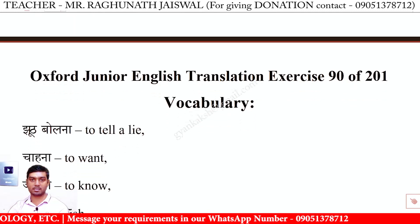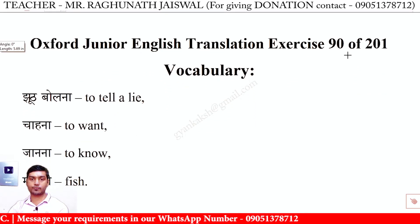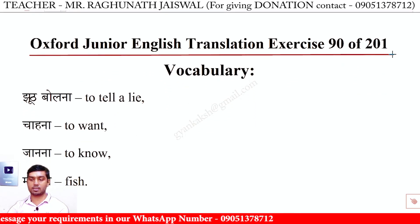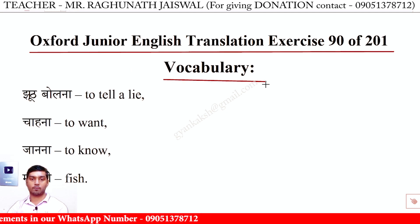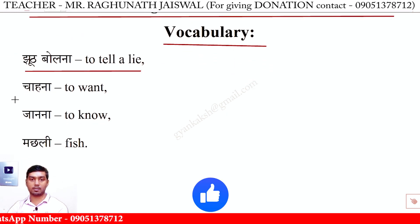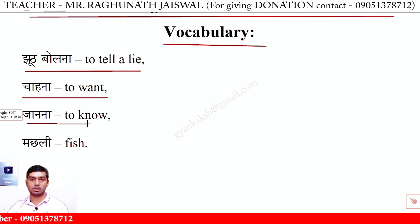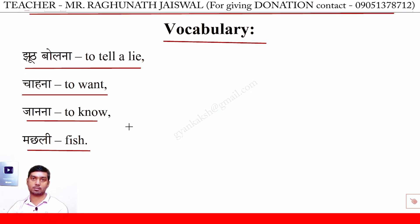Okay, let's also note some vocabulary from this lesson. Oxford Junior English Translation, exercise 90 of 201, vocabulary: झूठ बोलना — to tell a lie; चाहना — to want; जानना — to know; मछली — fish.